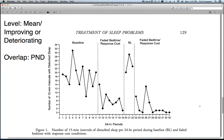Coming down to the graph, there are two things that you need to consider when determining level. You need to determine the level within any individual phase, and then, because replication is what we're looking for in a single subject study — or change in level between phases — we need to determine the change in level between phases. Always keep in mind that you can't compare across phases; you can only compare adjacent phases.